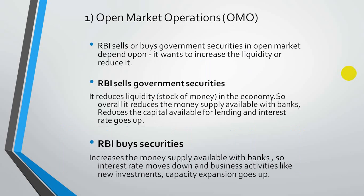The first quantitative tool is open market operations. These refer to government securities. Since the government monitors the money supply, it can either sell or buy these securities to control the amount of money. When RBI sells government securities, it reduces the cash available in the economy, reducing the overall money supply in the hands of banks, which reduces banks' capital available for lending.